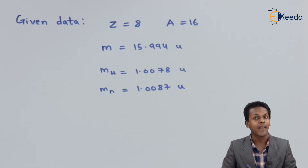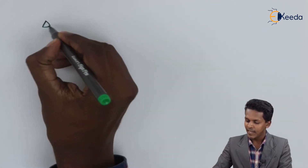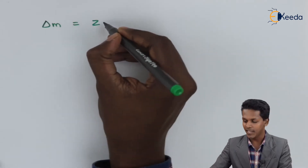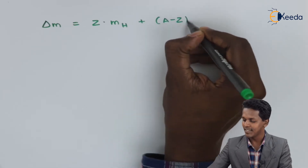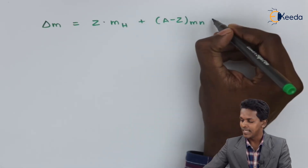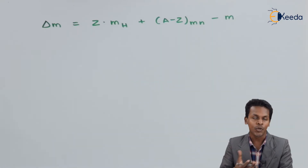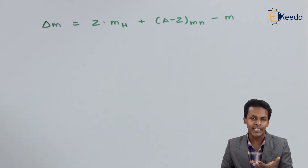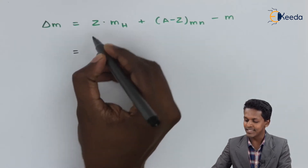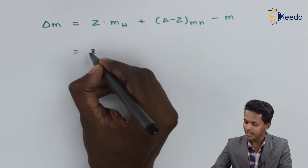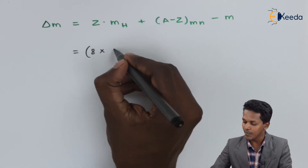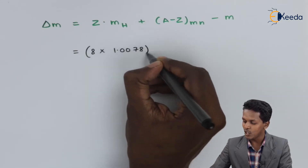The formula for the mass defect is: delta m equals Z times the mass of hydrogen, plus (A minus Z) times the mass of the neutron, minus m, where m is the observed mass of the atom. Substituting values: Z is 8, so we have 8 into 1.0078 unified mass units.